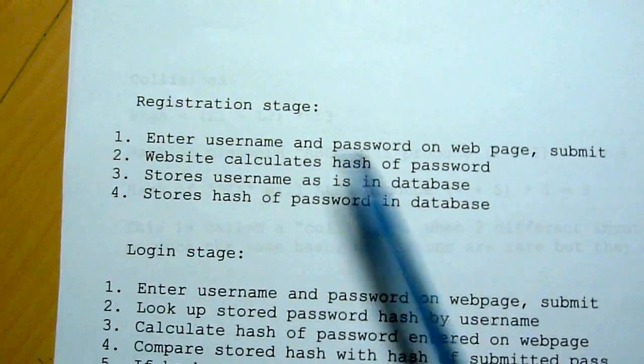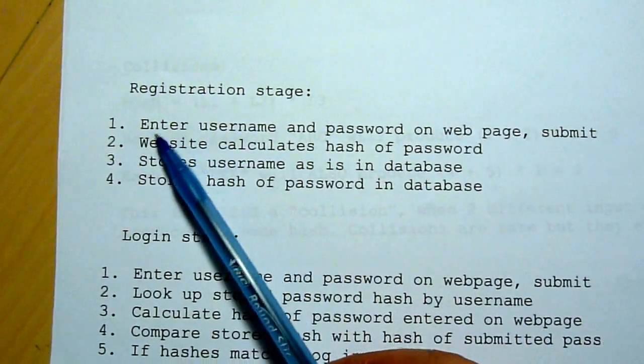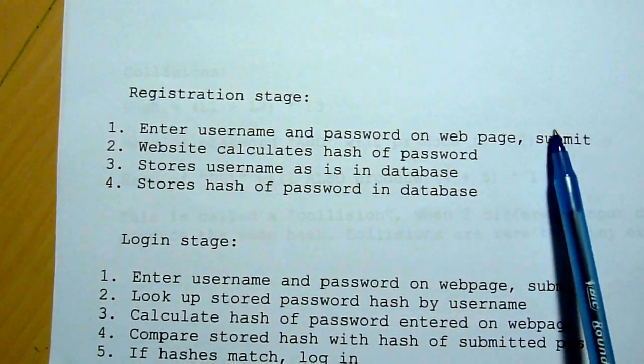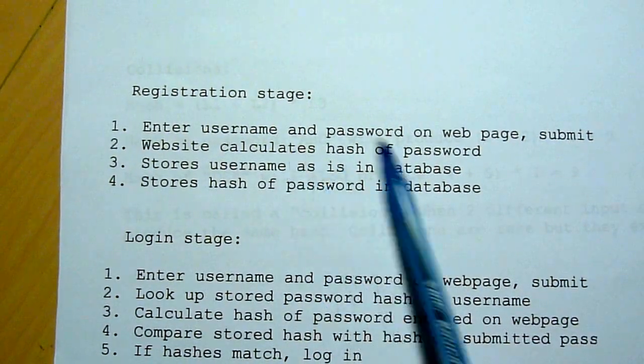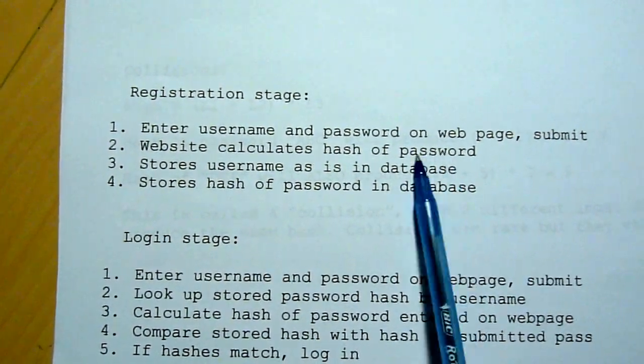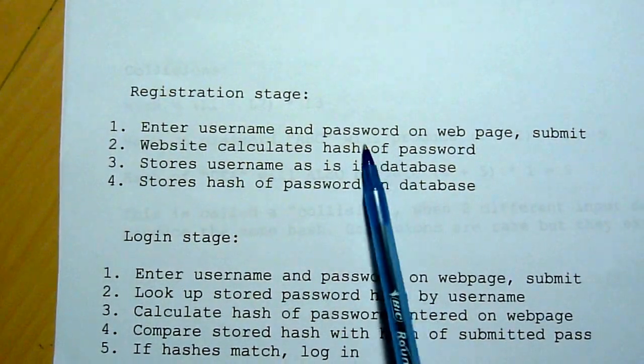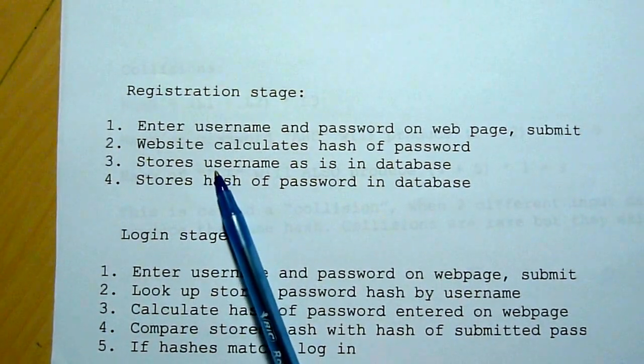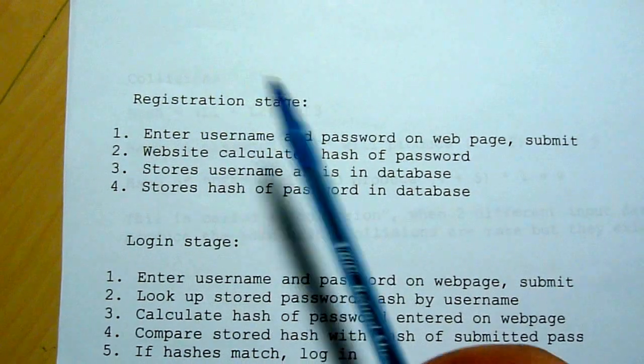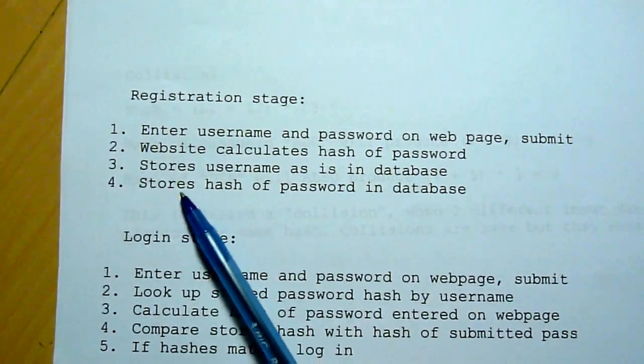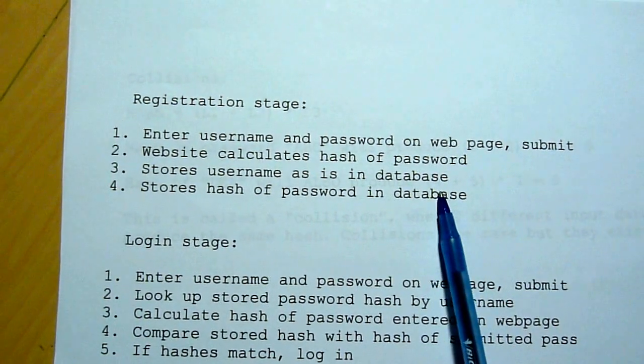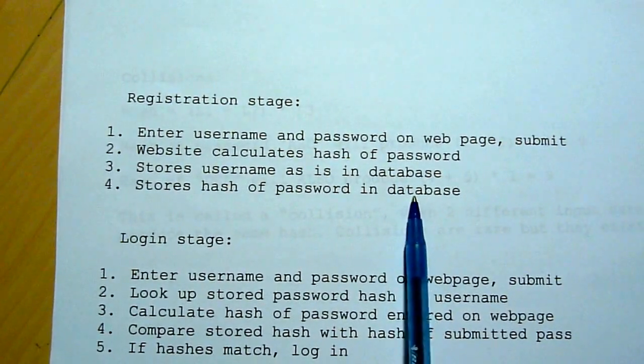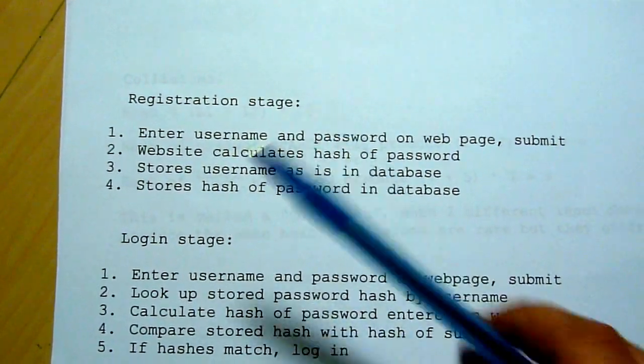And this is how websites work and why hashes are relevant. So you enter your username and password on the web page. When you register, you hit submit. The website calculates the hash of whatever you entered of your password. It stores the username, your email, and other stuff in the database, and then it stores the hash of the password in the database. So no actual password stored as plain text in the database, just the hash of it.